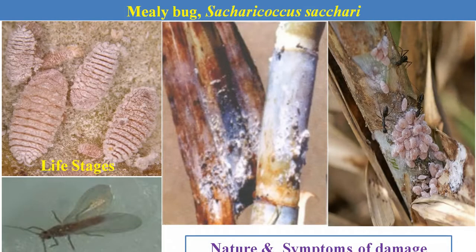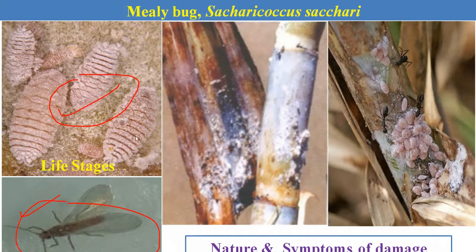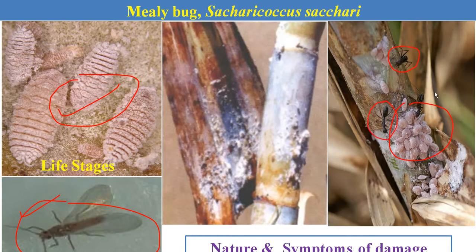The next is mealybug, Saccharococcus sacchari. The male mealybug has wings and the female does not. The female adult and nymphs are the damaging stages. Both nymphs and adults suck the cell sap from the tender plant parts; in case of severe infestation, the canes or leaves become withered and dry. A peculiar identification mark of mealybug infestation is the presence of black ants attracted toward the sticky substance secreted by the mealybugs during feeding.